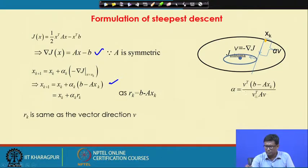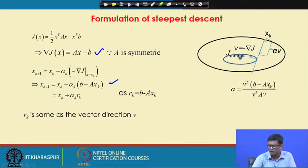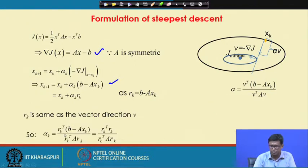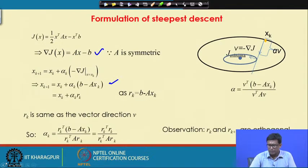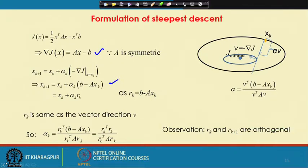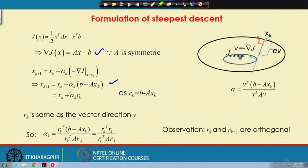Since v = minus grad j and minus grad j equals r_k, the vectors r_k and v are the same. The formula for alpha becomes: alpha = v-transpose (b minus A x_k) divided by v-transpose A v, which gives alpha_k = r_k-transpose r_k divided by r_k-transpose A r_k. There is also the observation that r_k and r_{k+1} are orthogonal, because grad j is the direction in which j reduces fastest and is perpendicular to the j contour where it was evaluated.